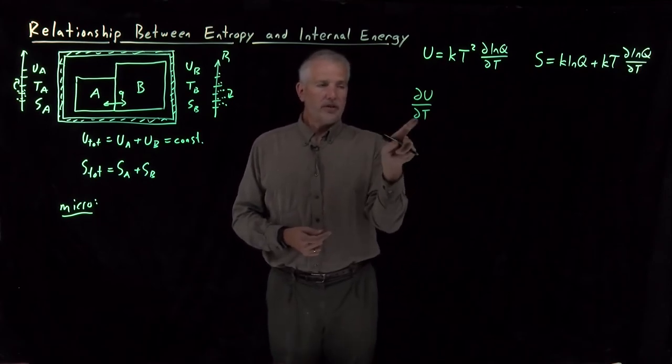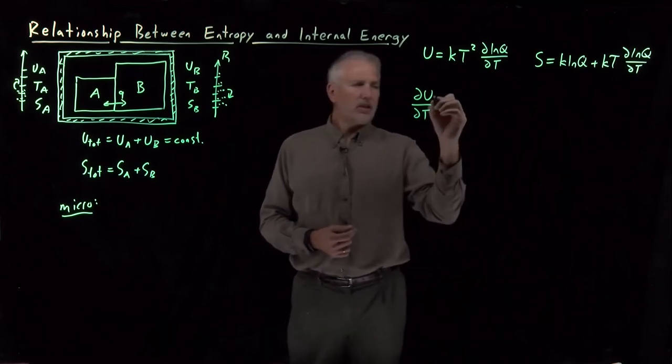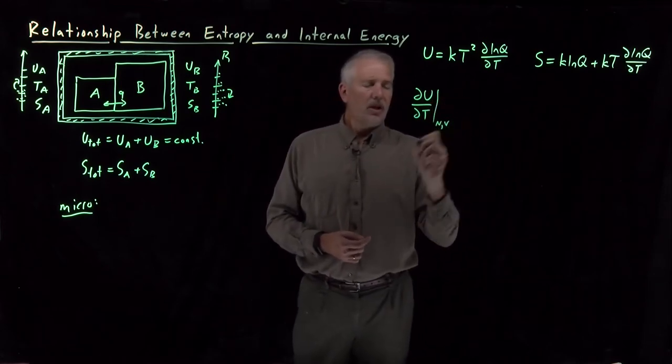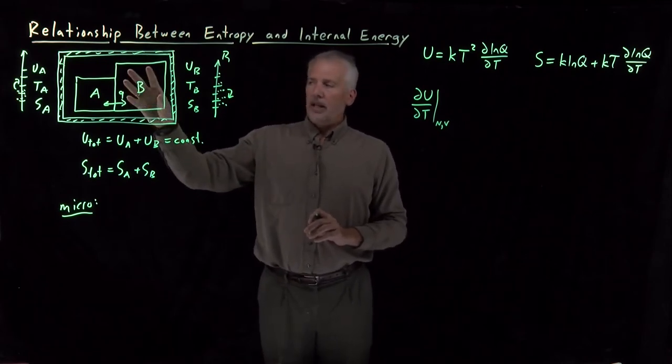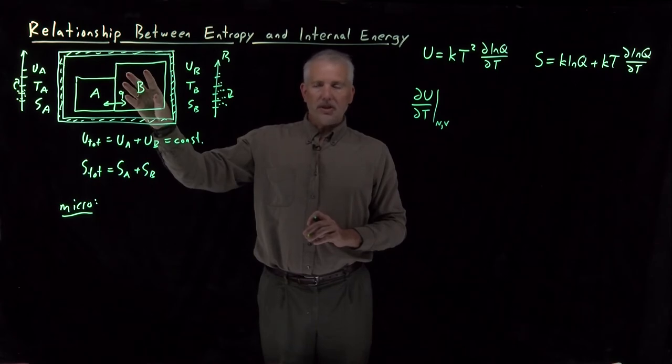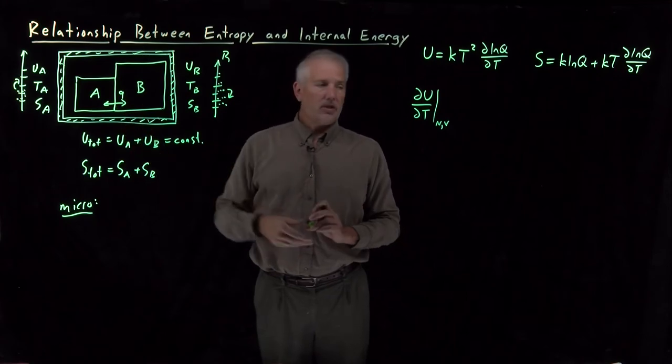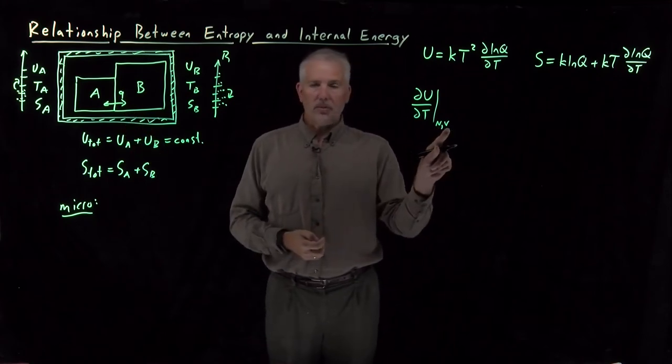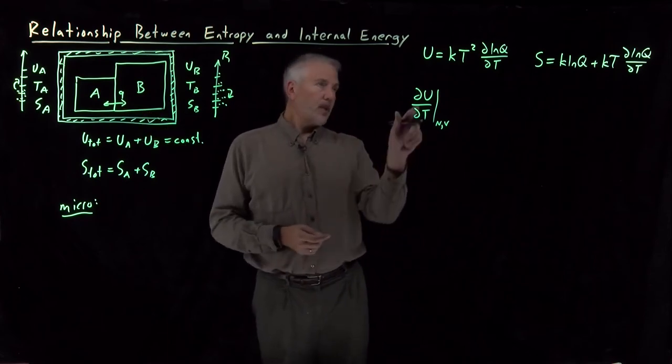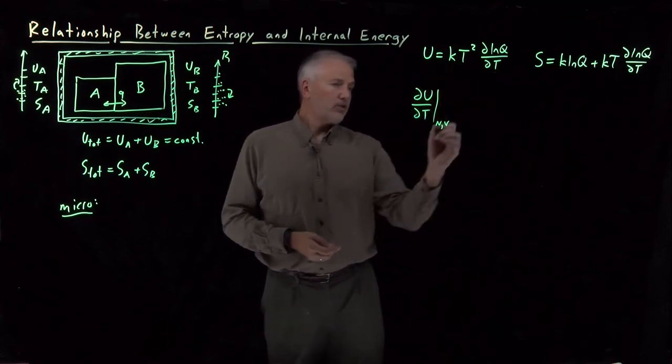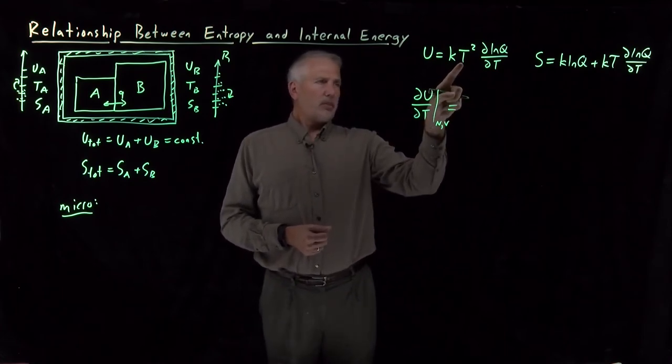That derivative tells us as the temperature is changing, how much does it change the energy? And in particular, it's not going to matter too much, but we're doing these derivatives at constant n and v. We're not allowing the number of molecules in this block to change. I'm not allowing material to transfer from block B to block A or vice versa, just energy. So, the number of molecules is not changing and the volume is not changing, just the energy and the temperature are changing. So, since we know what this expression looks like, we can take its temperature derivative.